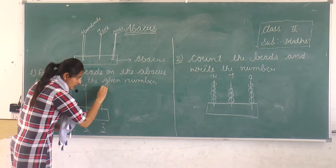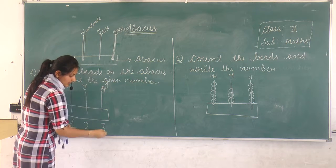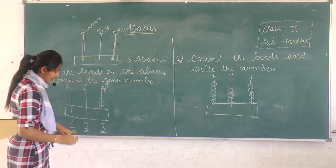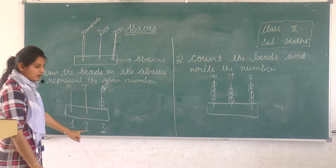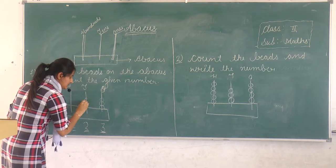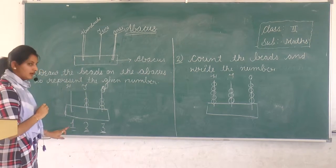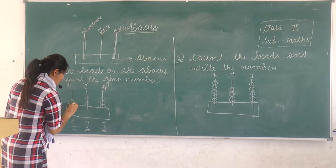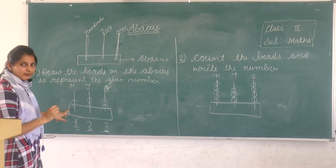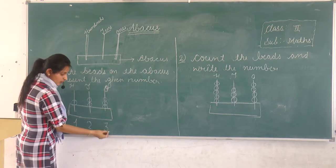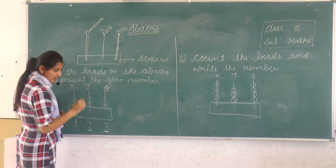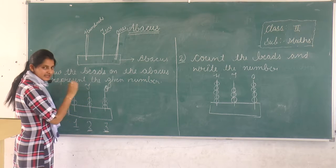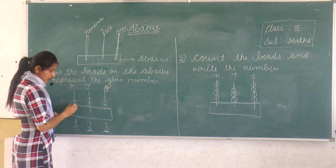On the ones spike, draw three beads: one, two, three. See what this is — two — then put two beads on the tens spike. See one — then put one bead on the hundreds spike. Again, see what this is — three — then put three beads on the ones spike. Two — put two beads on the tens spike. One — put one bead on the hundreds spike.